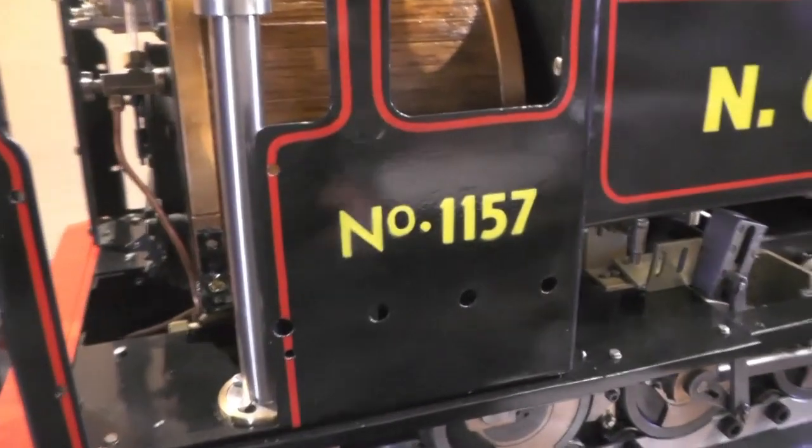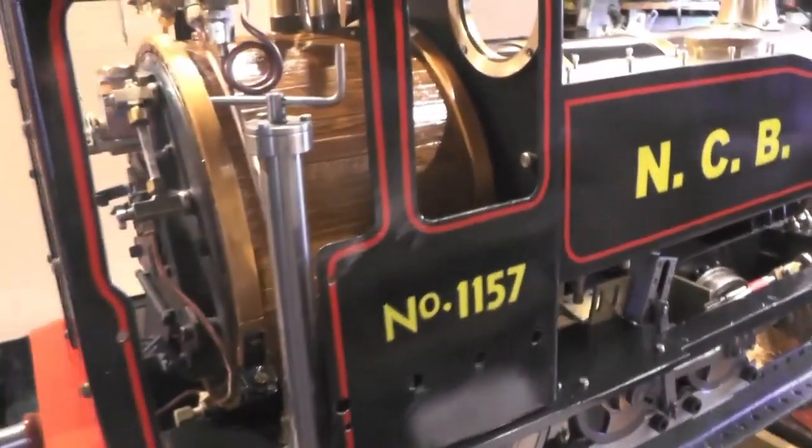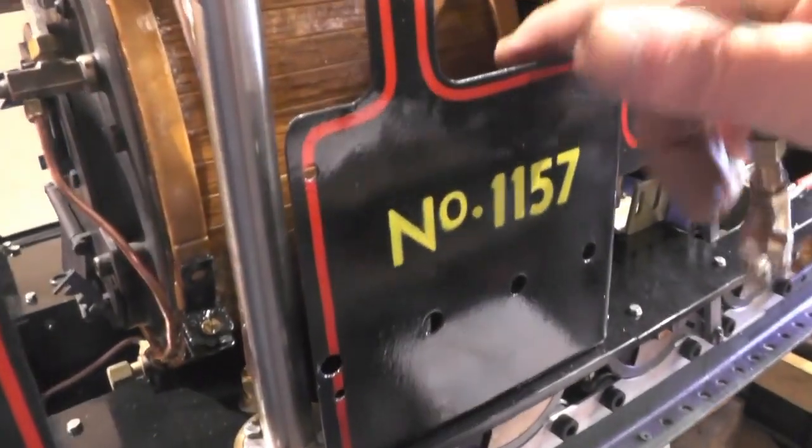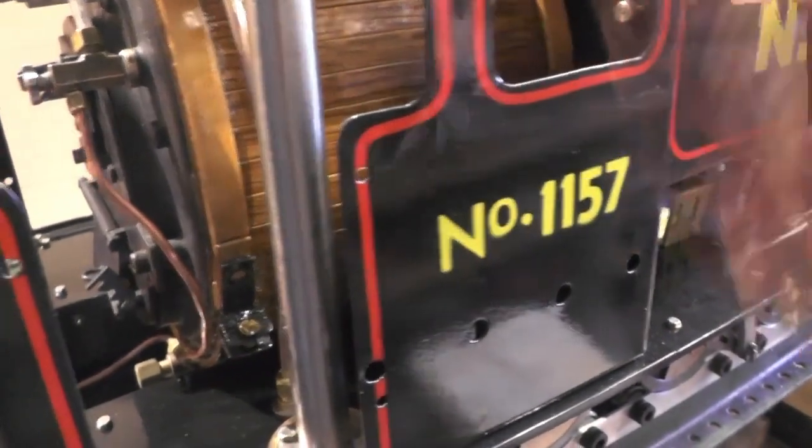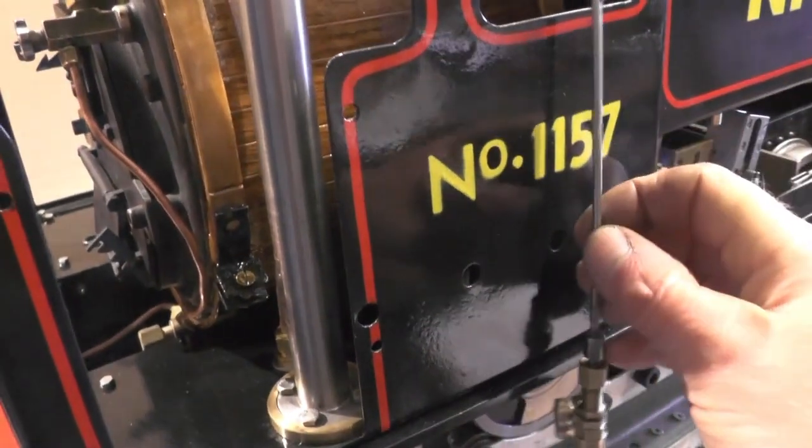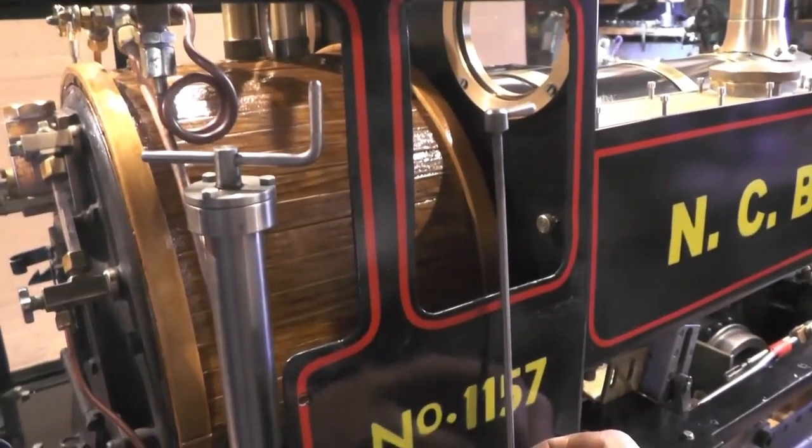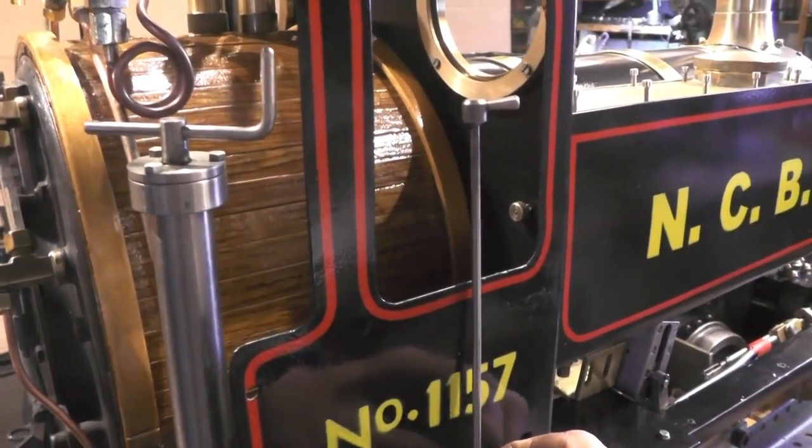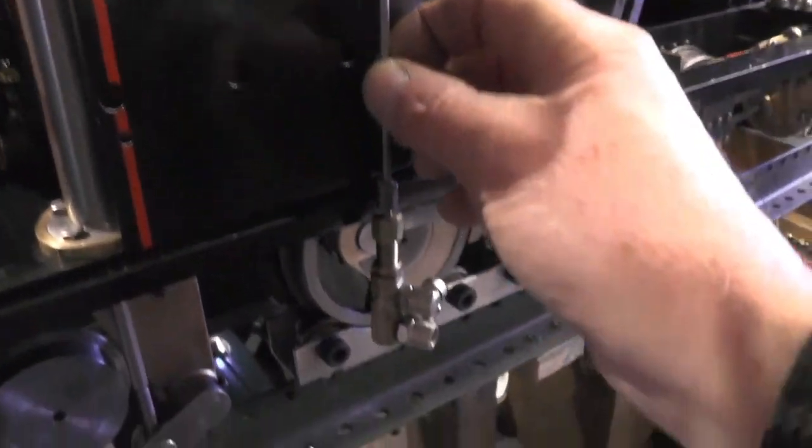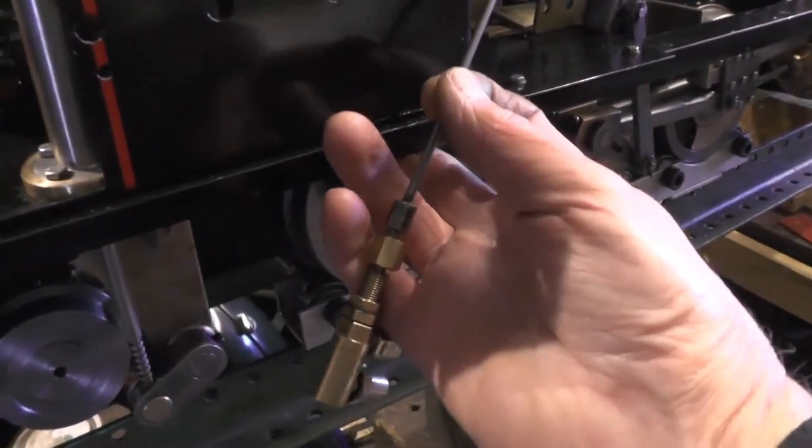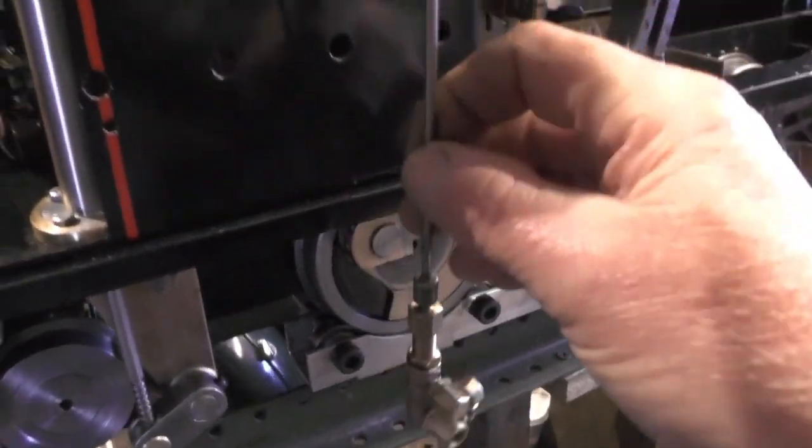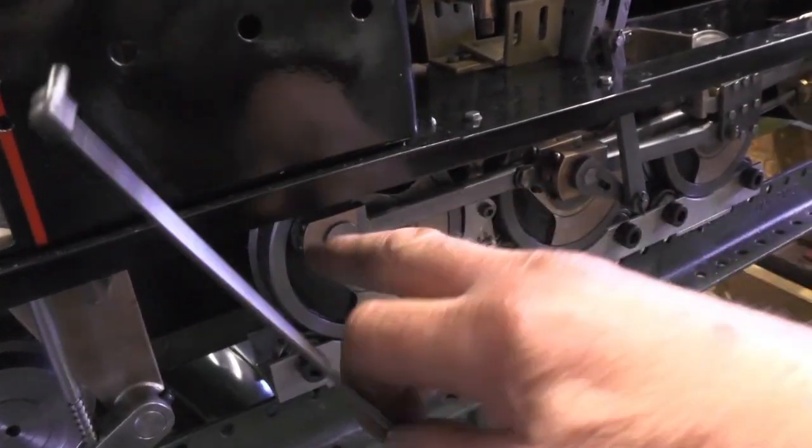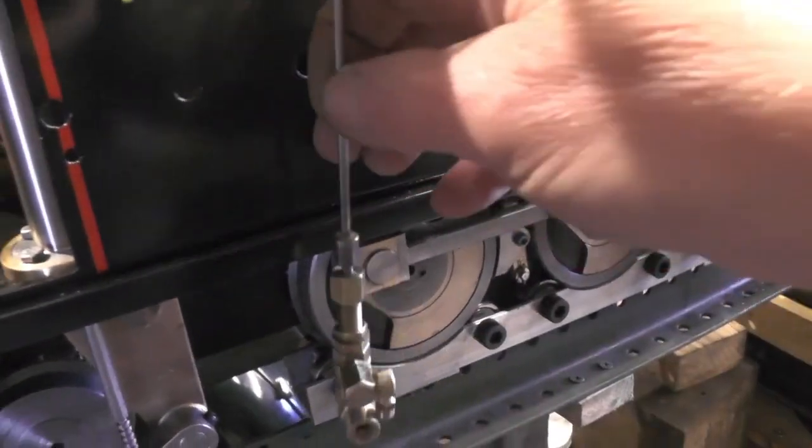Right so under normal circumstances the bypass valve normally sits in the cab somewhere in this position with the handle, the control handle coming up like that and then it fits underneath the cab and then you take your pipe work from this position up to your tanks and your pump.